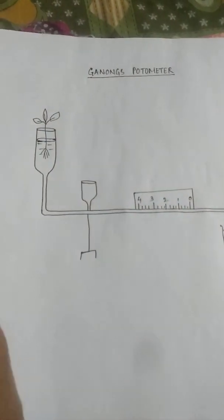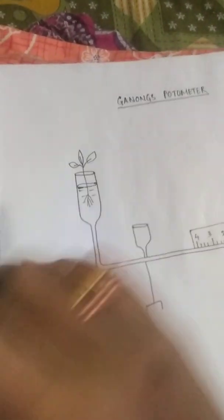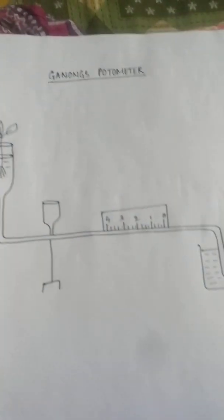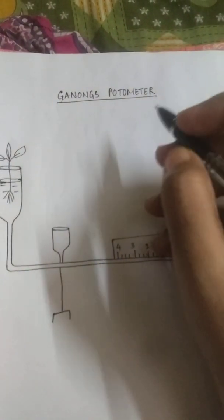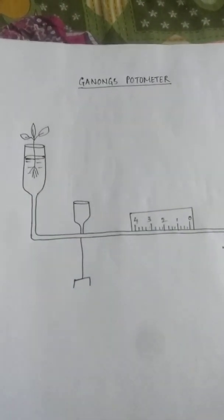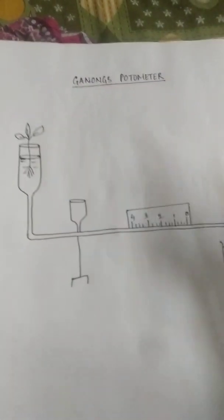Now what do you mean by transpiration rate? So first of all what is transpiration? Transpiration is the loss of water from the aerial parts of a plant. Excess loss of water.